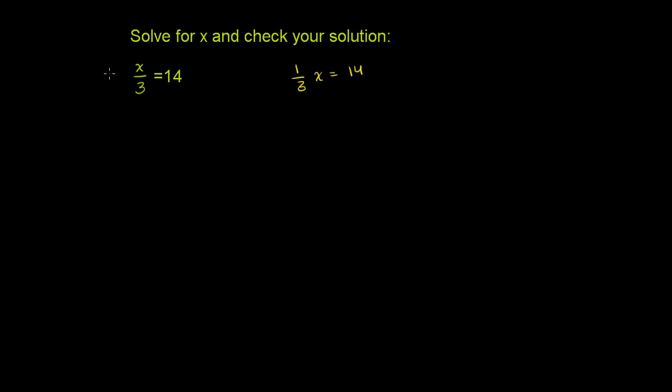And the reason that would work is if I multiply this by 3 over here, I'm multiplying by 3 and dividing by 3. That's equivalent to multiplying or dividing by 1. And these guys cancel out. But remember, if you do it to the left-hand side, you also have to do it to the right-hand side. And actually, I'll do both of these equations at the same time, because they're really the exact same equation.